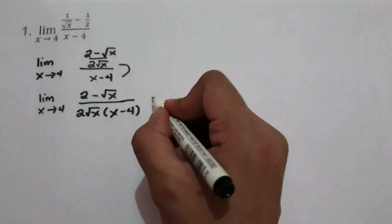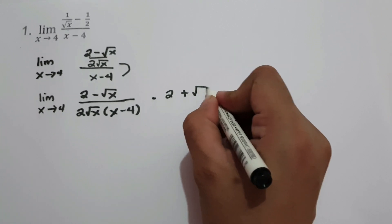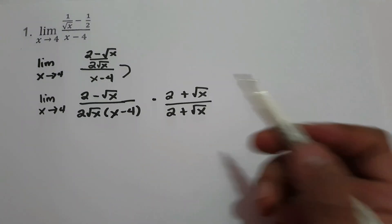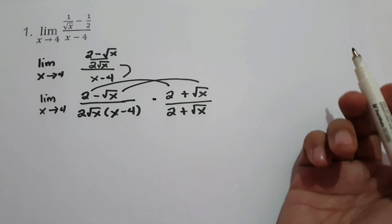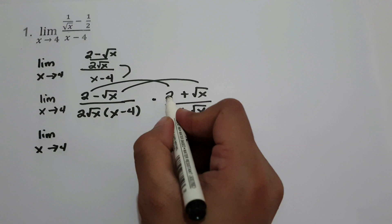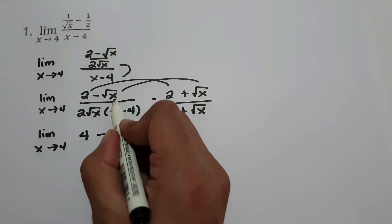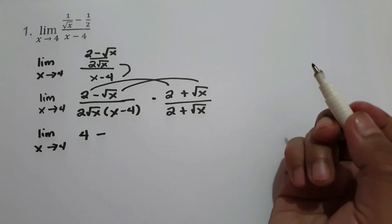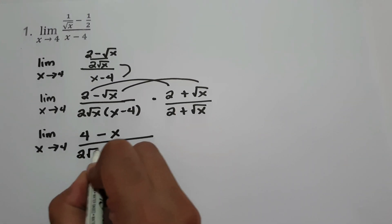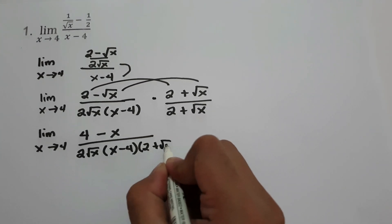Then let us multiply this by the conjugate of 2 minus square root of x, that is 2 plus square root of x. Let's multiply the first term by the first term and last term by the last term. That is limit as x approaches 4. 2 times 2 is 4, negative times positive is negative, and the square root of x times the square root of x is the square root of x squared, which equals x. The denominator is 2 square root of x multiplied by x minus 4 times 2 plus square root of x.